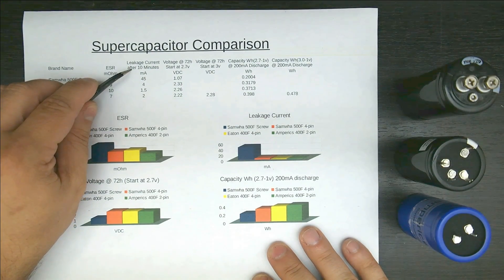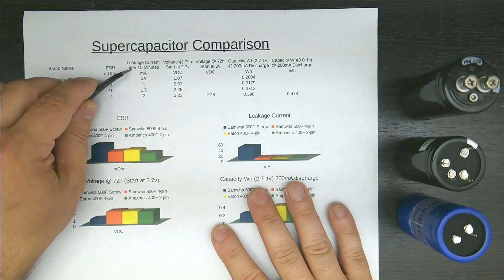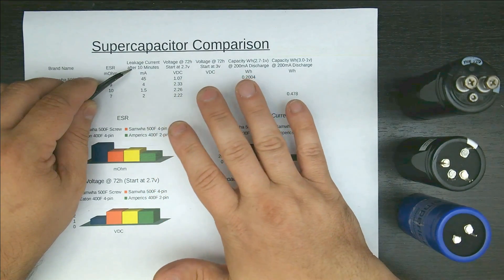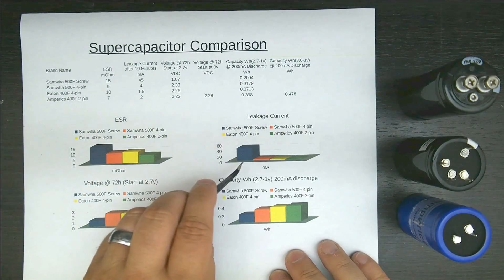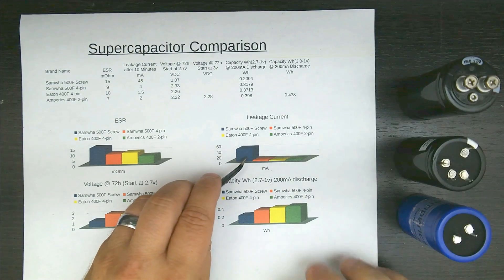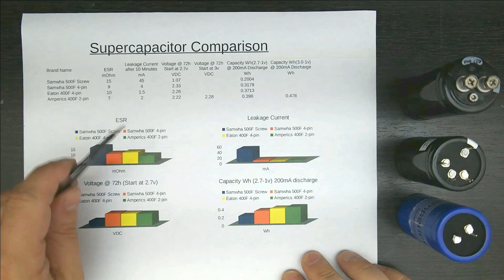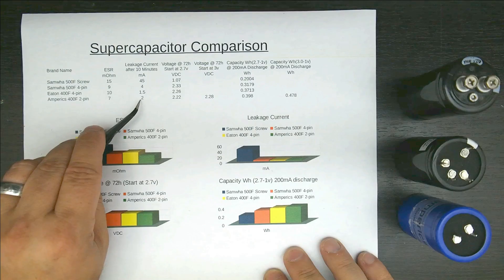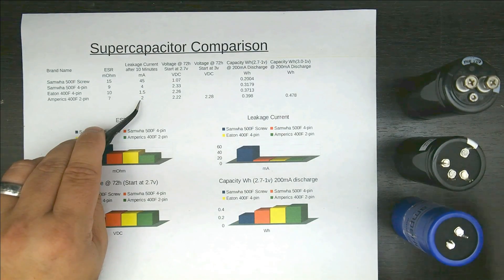Next we have the leakage current after 10 minutes. This is me leaving it on my power supply after charging it up from 0 to 2.7 volts at a 1-amp constant current. And once it hits 2.7, I let it settle for 10 minutes. And this is the amount of current it's still pulling just to maintain 2.7 volts in milliamp. And yeah, you can see how this crap cap skews all the data right there, because it pulled 45 milliamps. The rest of them were pretty good. The 4-pin job was 4 milliamps. The Eton was 1.5 milliamps. And these came in really close at 2 milliamps. They were almost just as good in that respect, at least in my testing.